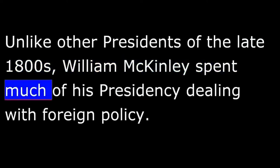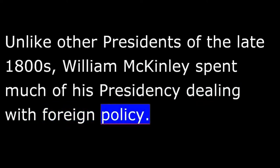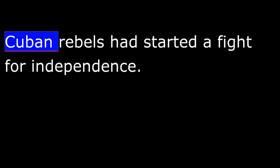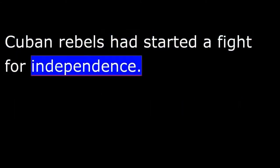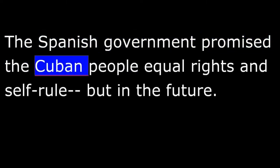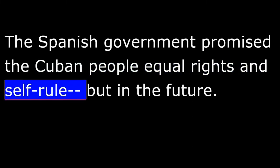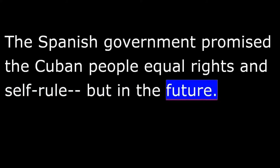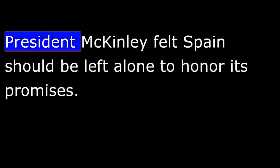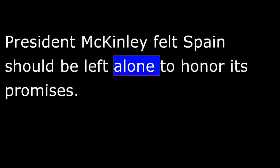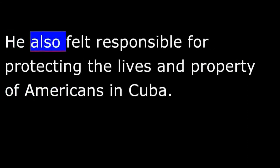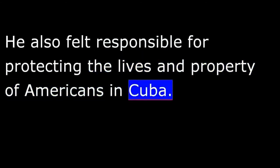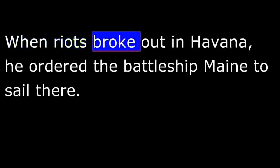Unlike other presidents of the late 1800s, William McKinley spent much of his presidency dealing with foreign policy. The most serious problem involved Spain. Spain ruled Cuba at that time. Cuban rebels had started a fight for independence. The Spanish government promised the Cuban people equal rights and self-rule, but in the future. The rebels did not want to wait.